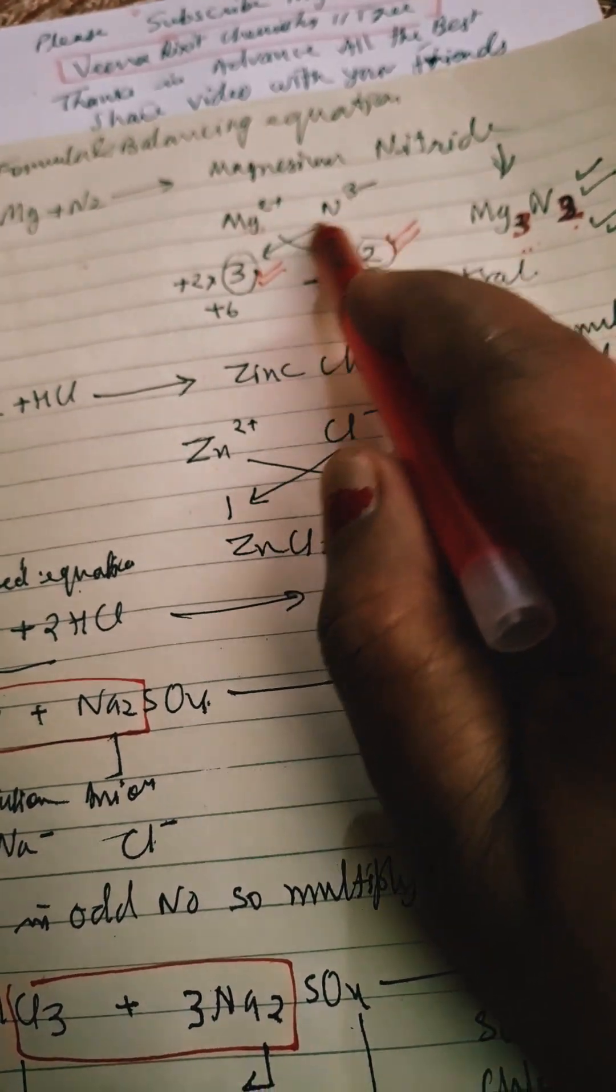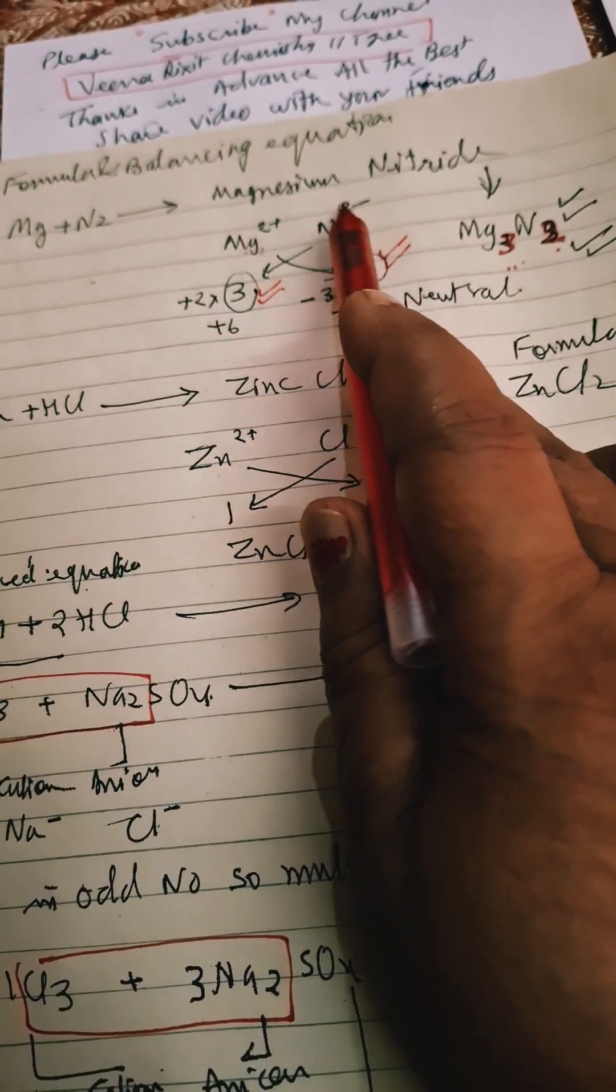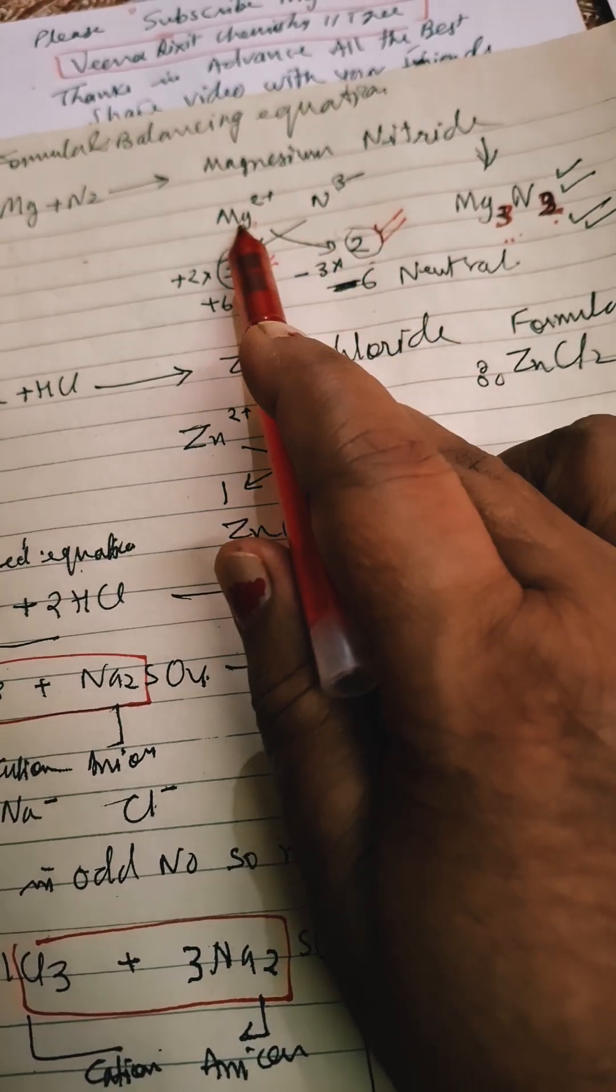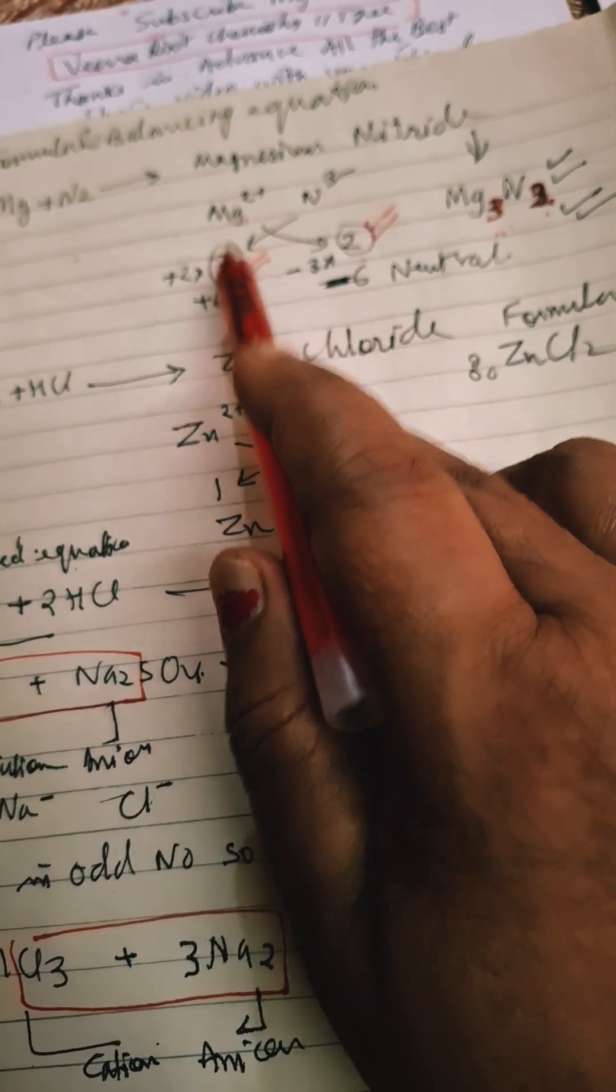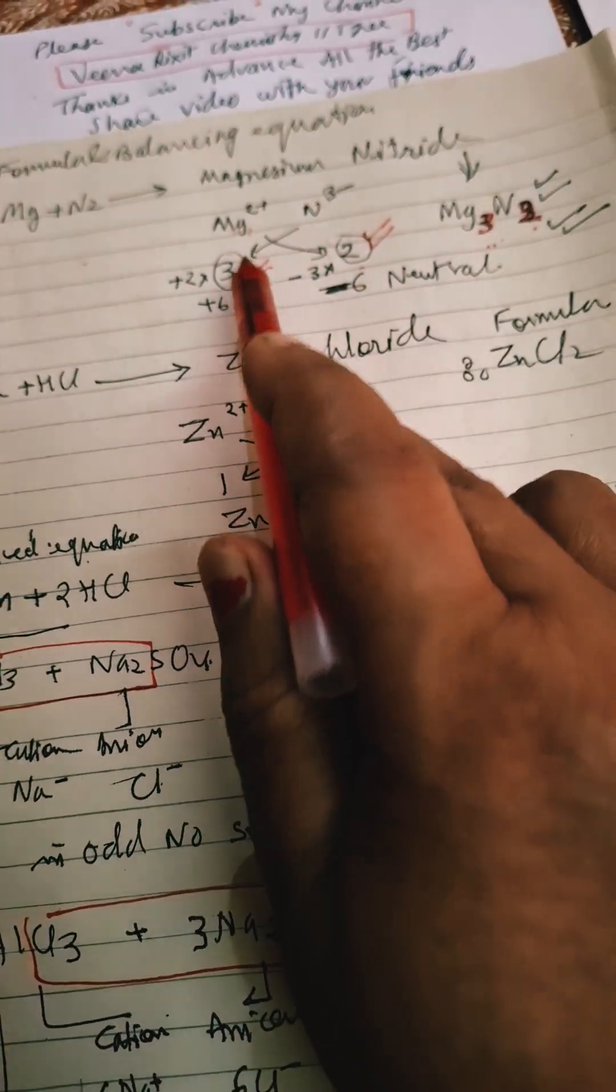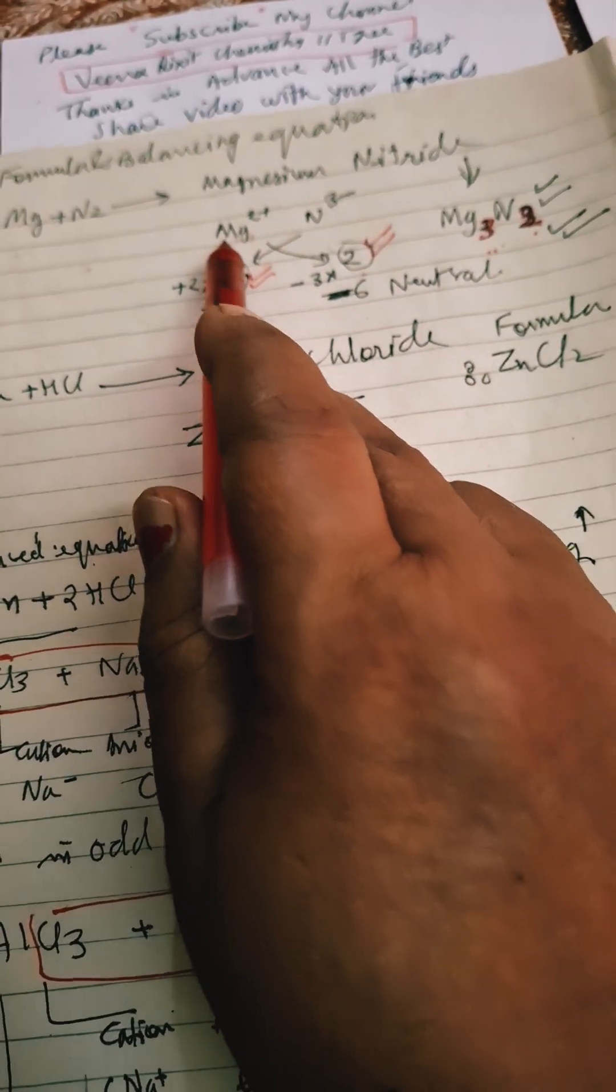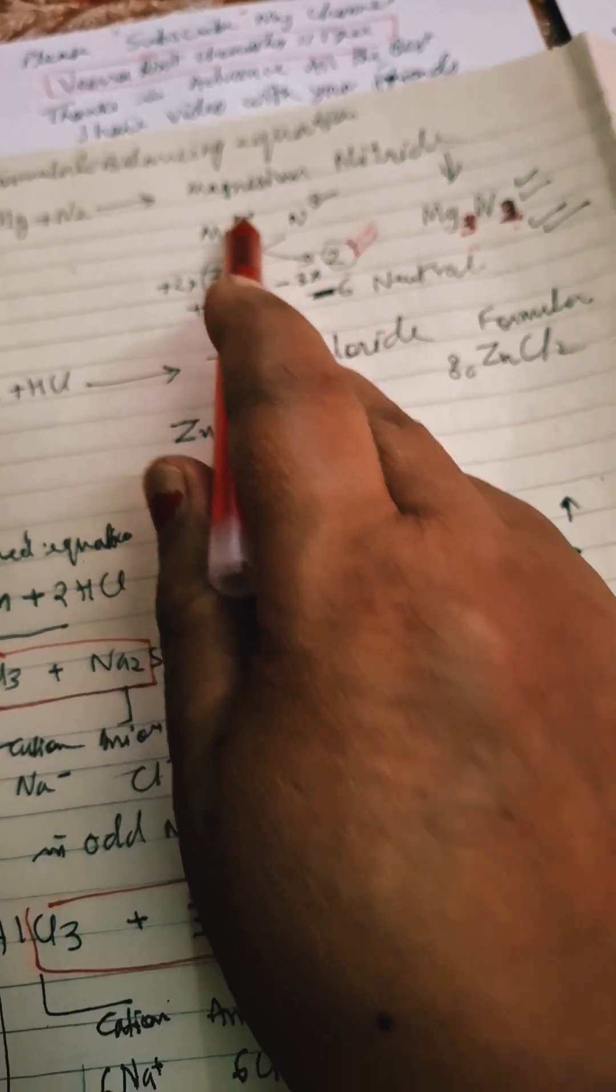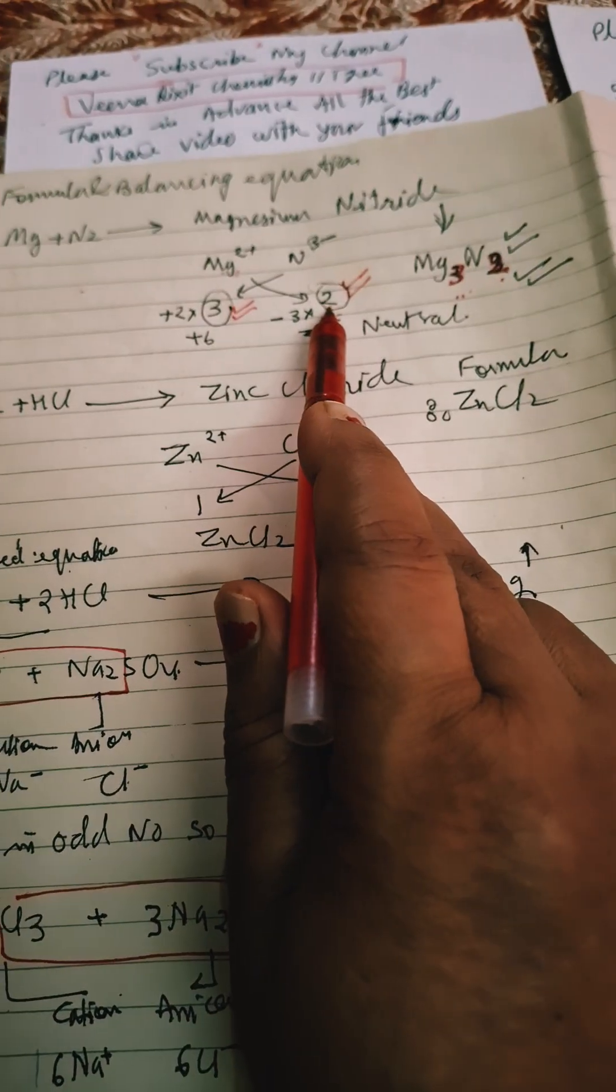So how to write down this formula? Here we will put respective charges and then we multiply this magnesium by 3 and nitrogen by 2 because these are crisscross. This charge we will write on the subscript of Mg, and this 2 positive, this magnitude will take, is written under this nitrogen. Subscript of nitrogen is having 2.